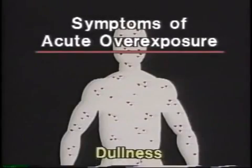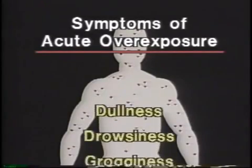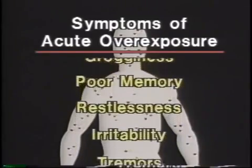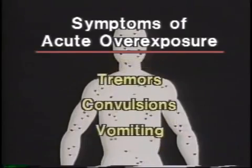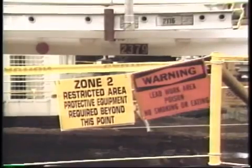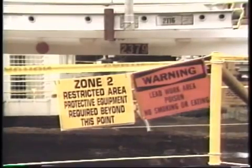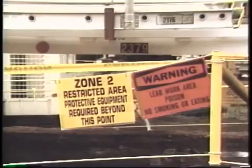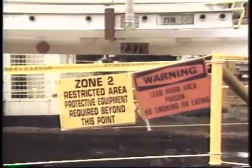Symptoms of acute overexposure include a feeling of dullness, drowsiness, grogginess, poor memory, restlessness, irritability, tremors, convulsions, and vomiting. Workplace exposures to deadly amounts of lead are highly unusual, but not impossible.